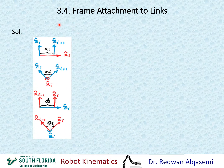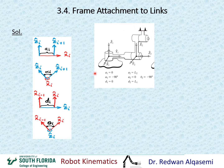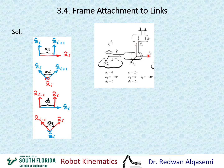To start solving this problem I've put a quick reference here to show how we can extract the DH parameters. For the first choice, z1 is the axis of rotation for theta1 and z2 is the axis of rotation for theta2. x1 is the common perpendicular between z1 and z2 — since they intersect, the common perpendicular is right here. x2 is the common perpendicular between z2 and z3, pointing towards z3. Both y1 and y2 are assigned according to the right-hand rule.